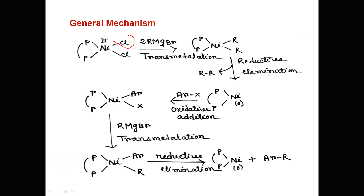The chlorine group attached to nickel is exchanged with the magnesium group, and the R group attached to magnesium is exchanged with nickel. When a second transmetallation occurs, another chlorine group on nickel is exchanged with magnesium, and another R group attached to magnesium is exchanged with nickel to give a diorganonickel intermediate. This undergoes reductive elimination to give the nickel(0) species.